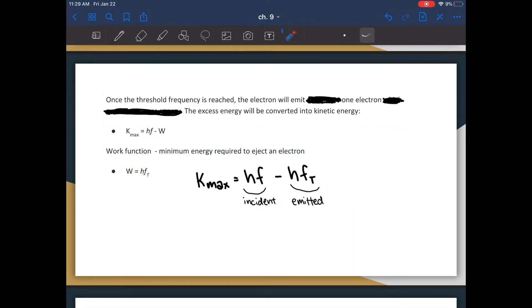We talked about how this emission is an all-or-nothing process. So whether you have an incident photon that is at the threshold frequency, or it is far above the threshold frequency, you will still only have one electron emitted per photon. And the excess energy will be converted into kinetic energy. This kinetic energy is denoted by kmax, which is equal to hf, which is the energy of your incident photon, minus the work function.